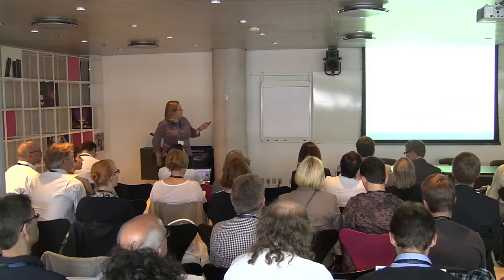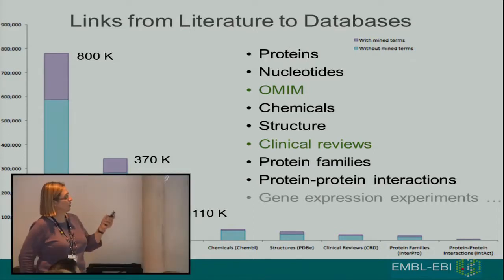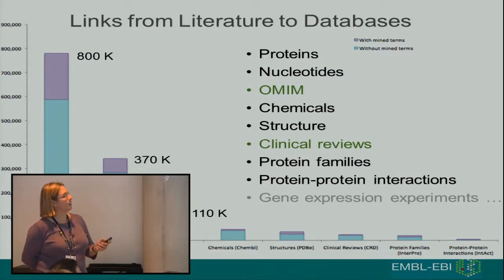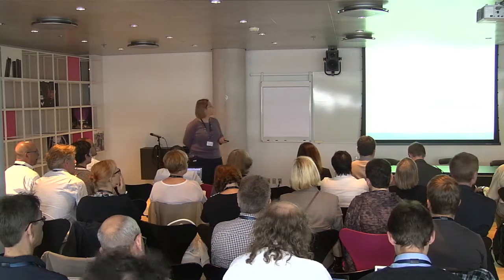In terms of the links we make, here's a list of data types we link to: proteins, nucleotides, OMIM which is Online Mendelian Inheritance in Man — a text-based database on genetic diseases — chemicals, protein structures, clinical reviews, protein families, and protein-protein interactions. The winner in terms of number of articles linked is UniProt, because of all those curators working away — there are 800,000 articles in our space linked to UniProt. Numbers go down to things like protein-protein interactions where there are only about 5,000 papers, because defining a protein-protein interaction unequivocally requires a lot of scientific work.